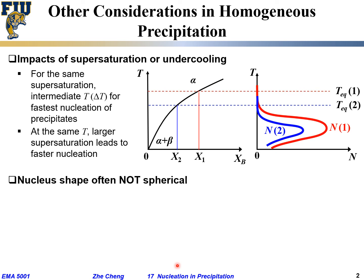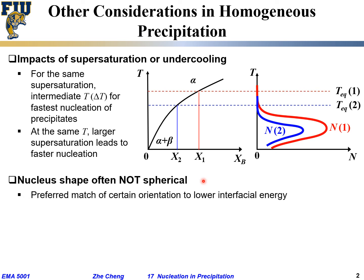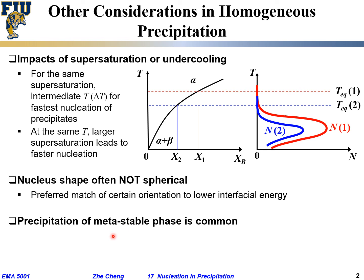Another complication in precipitation is that in many cases the nucleus shape is in reality not spherical. Even though in the homogeneous nucleation simplification we assumed spherical, in reality most cases the nucleus tries to match along certain crystal planes or orientations in order to minimize interfacial energy. Furthermore, for titanium and aluminum alloys, the precipitate that forms is often not even the most stable beta phase — it's a metastable phase such as theta-prime or theta-double-prime. These metastable phases have less driving force but also a lower barrier, so the system prefers to form them first.